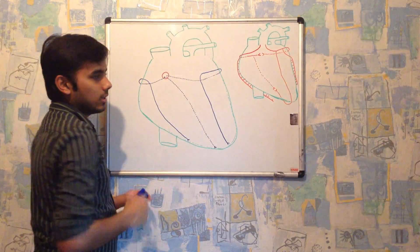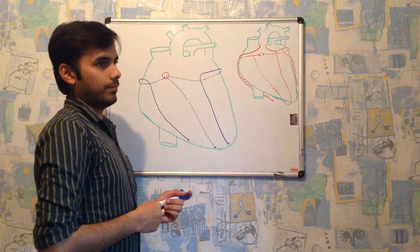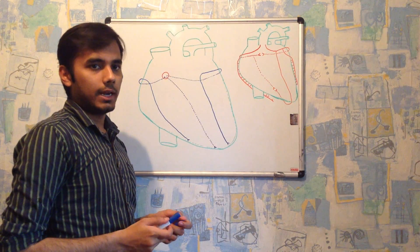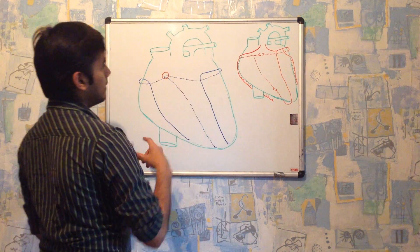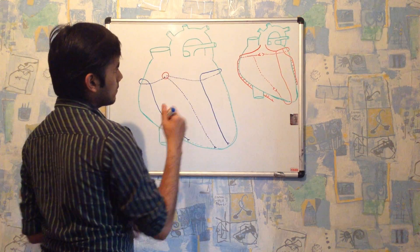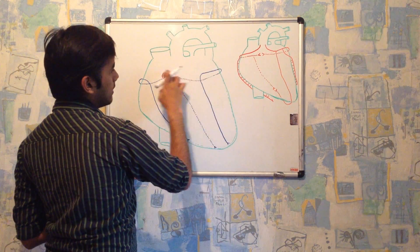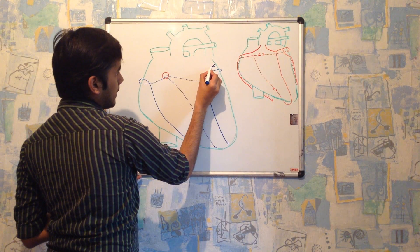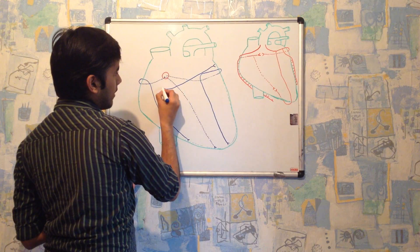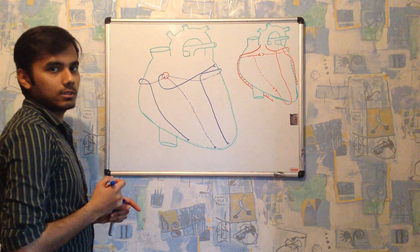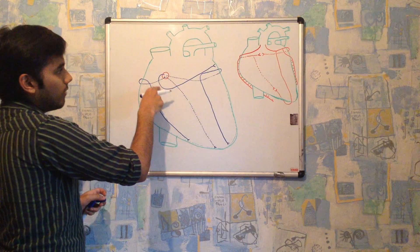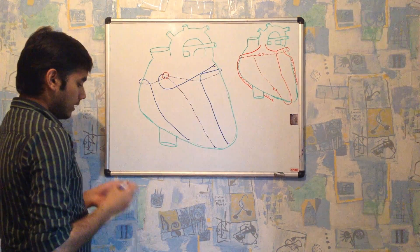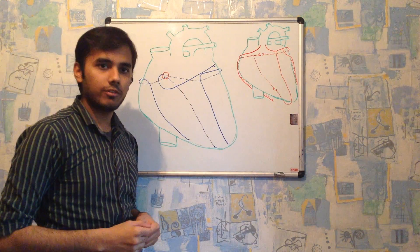There are two more veins in addition to the three major ones. The first is called the oblique vein of the left atrium. From the left atrium it passes obliquely downwards and finally drains into the coronary sinus. It is called the oblique vein of the left atrium because it starts from the left atrium.